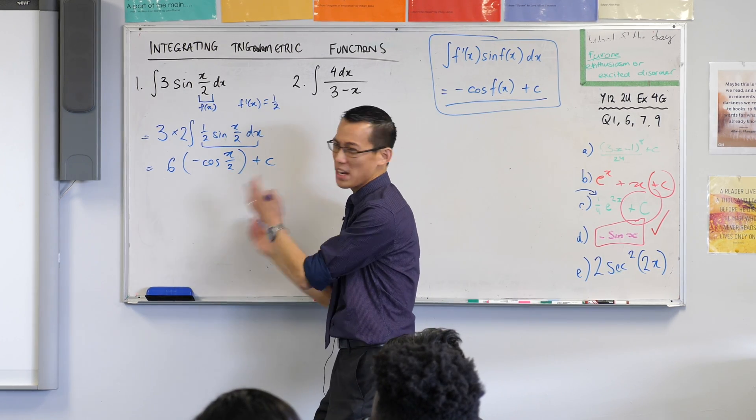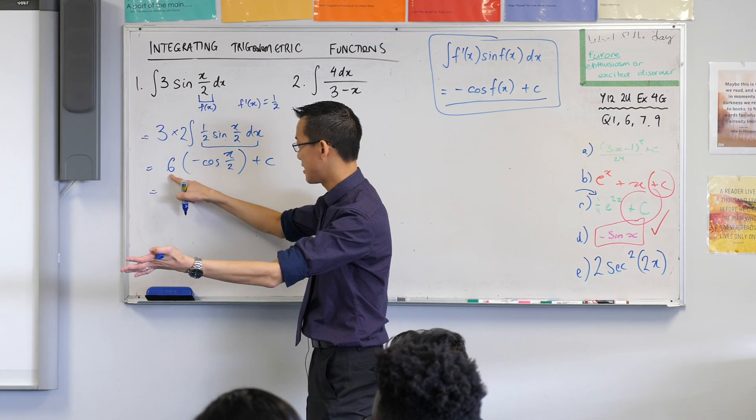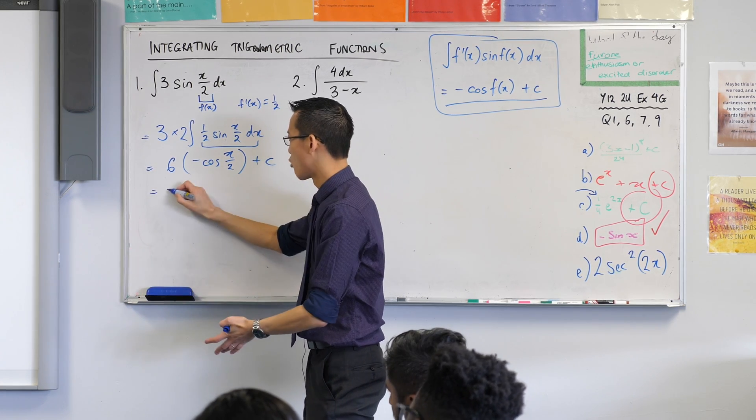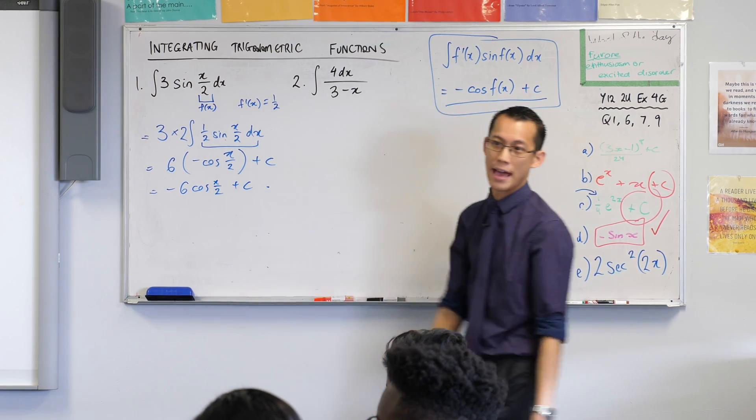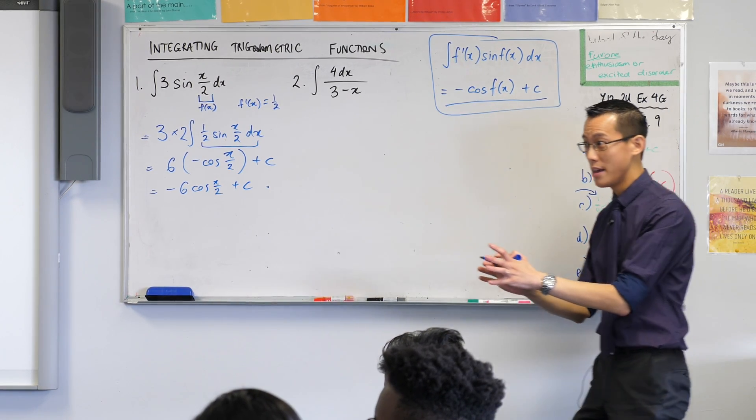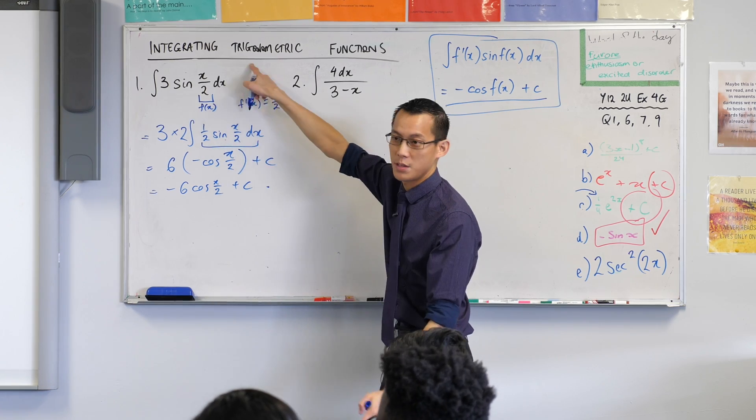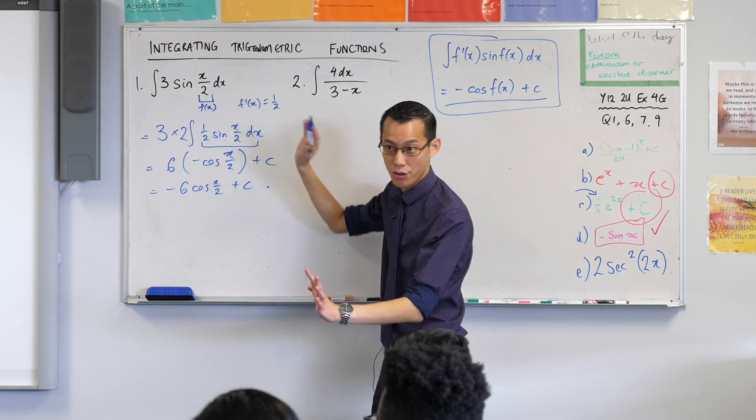Would it be negative 6 cosine x on 2? So at this point I've done the integration which is the hard part, but I should tidy it up. That 6 and that negative etc. I'll write that minus out the front and then I'm home and hosed. Are you happy with that? Now you could of course, and I hope you do, if you're not sure, convince yourself by differentiating back to here and you're good to go.